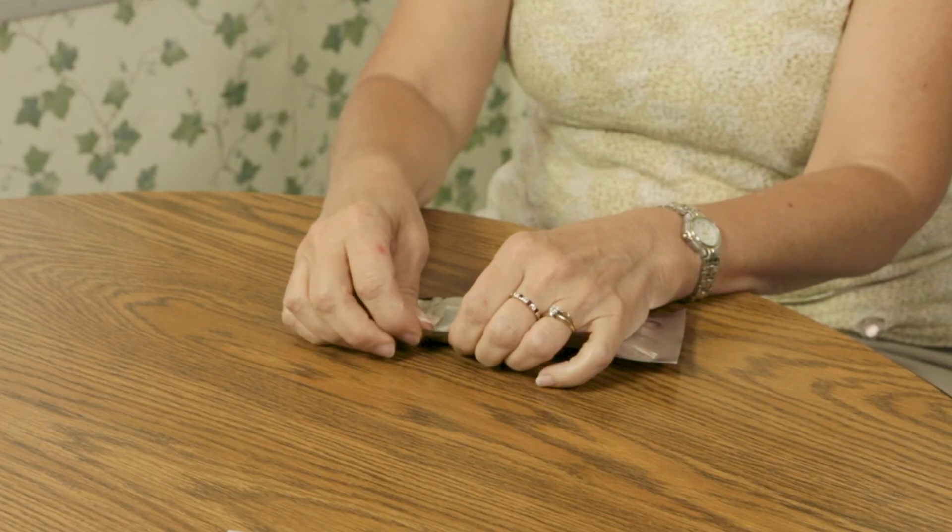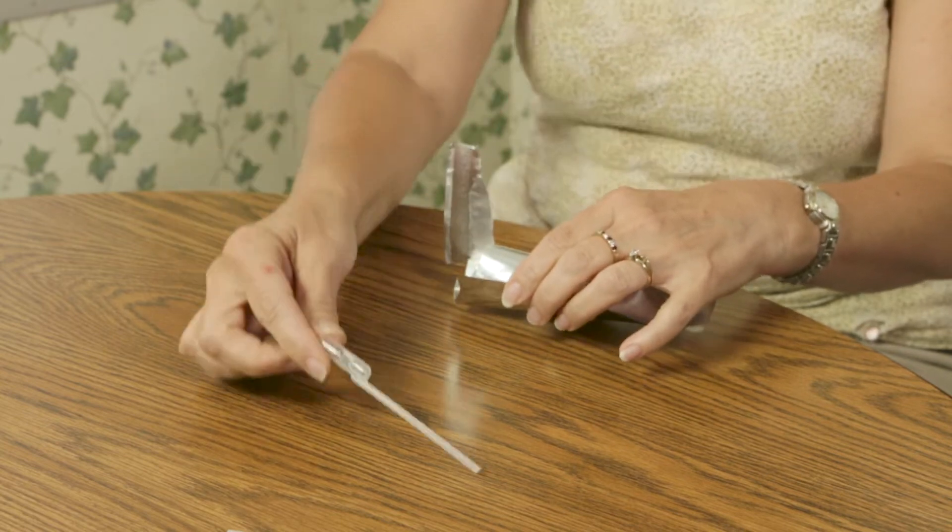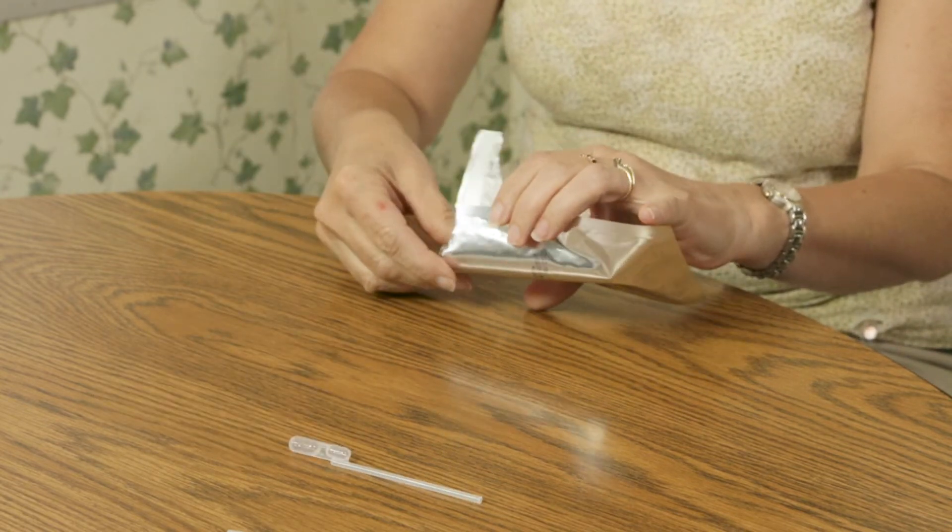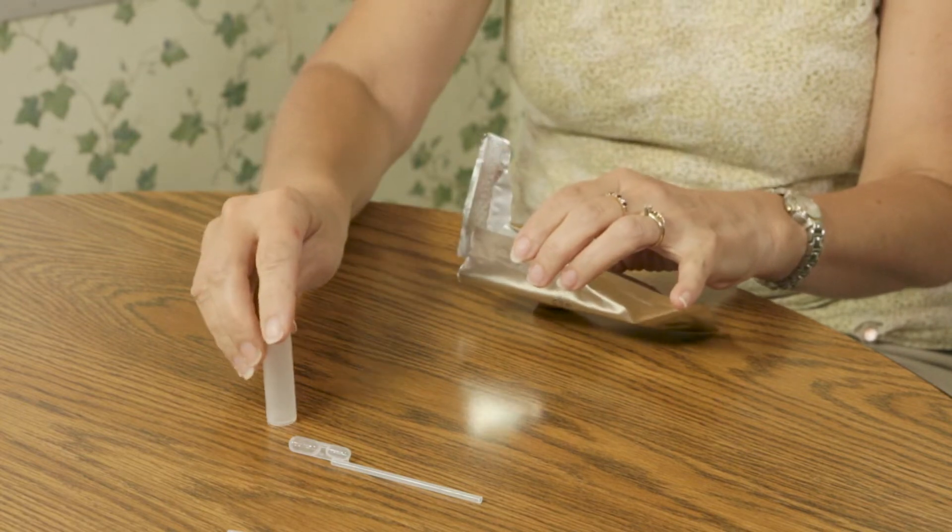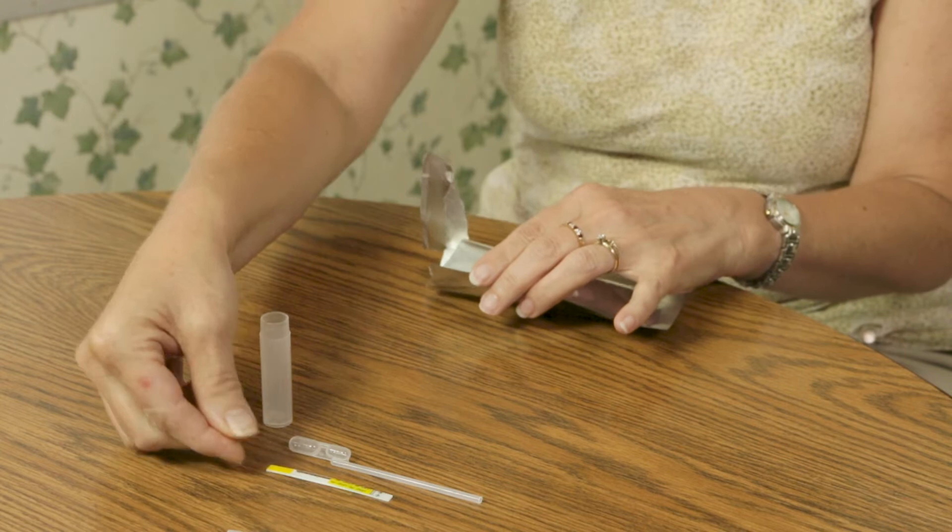How to perform the Healthmetric Lead Test for drinking water. Open the foil packet and remove the pipette, testing vial, and lead test strip. Discard the desiccant packet.